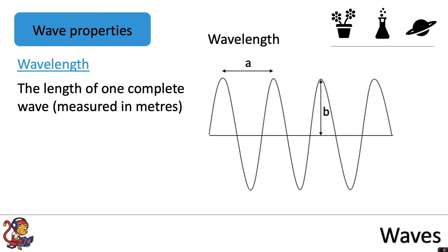The first property we'll look at is wavelength. Wavelength is the length of one complete wave and it's measured in metres. So here we're measuring wavelength between two peaks.